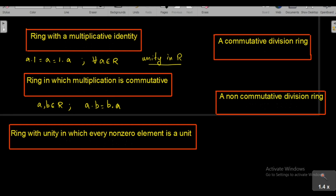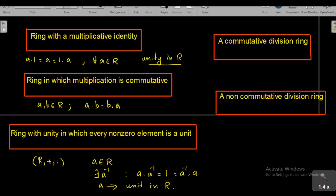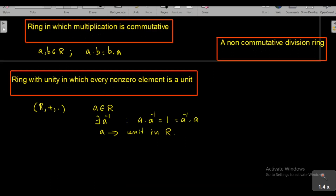Since R with addition is an abelian group, every element in R must have an additive inverse in R. But in a ring an element may not have a multiplicative inverse. Suppose R is a ring and we take an element A in R. If there exists an element denoted A⁻¹ such that A · A⁻¹ = 1 = A⁻¹ · A, that is if A has a multiplicative inverse in R, then A is called a unit in R.